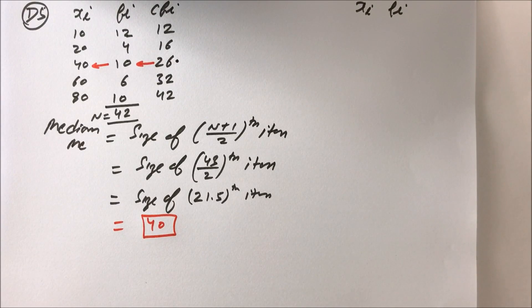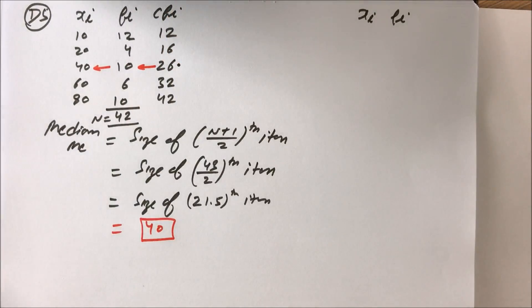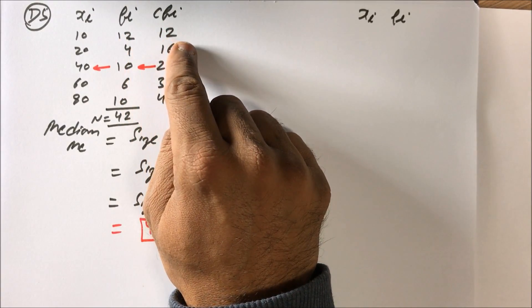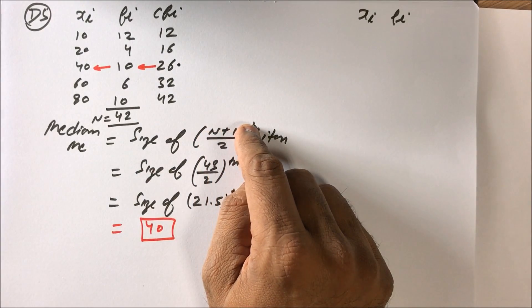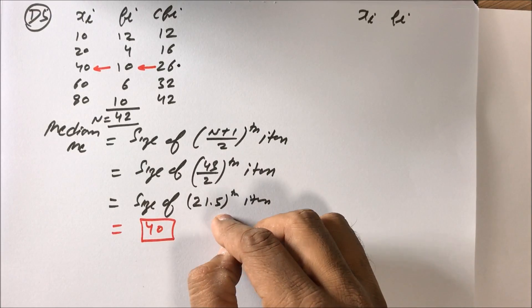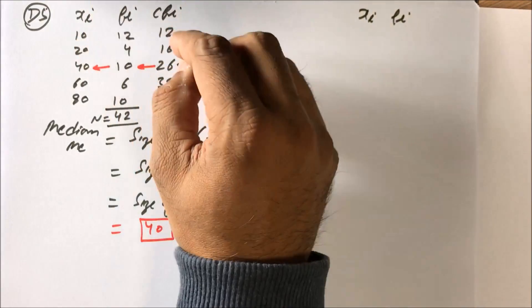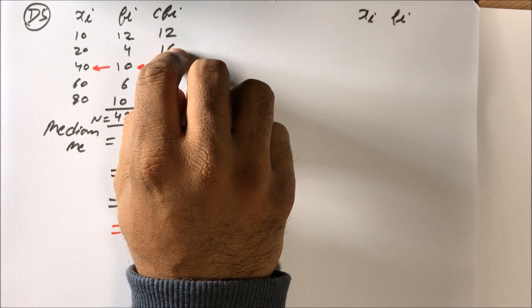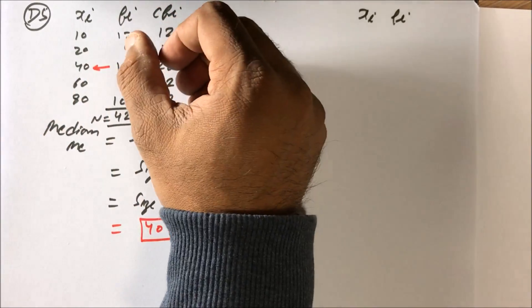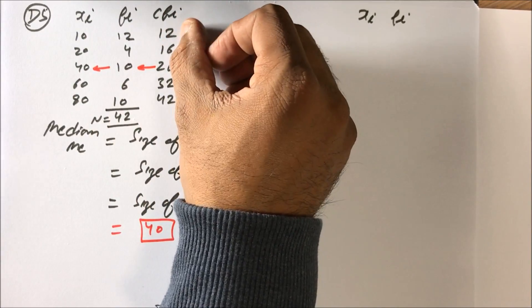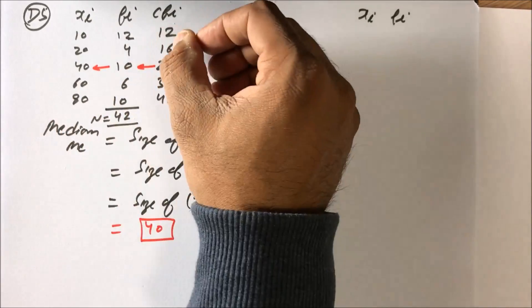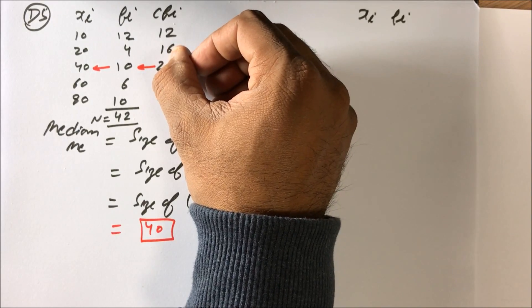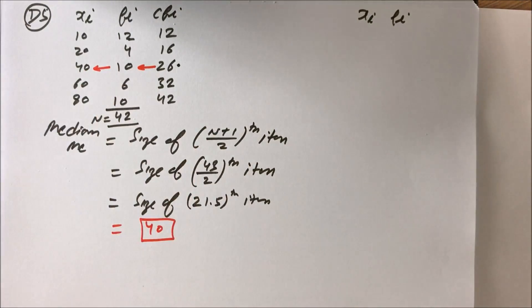So the answer is 40 for this discrete series. To recap: CF is 12, 16, 26, 32, 42. We need the 21.5th item. Up to rank 12 the value is 10; ranks 13–16 are 20; ranks 17–26 are 40. Since 21.5 falls between 17 and 26, the median is 40.